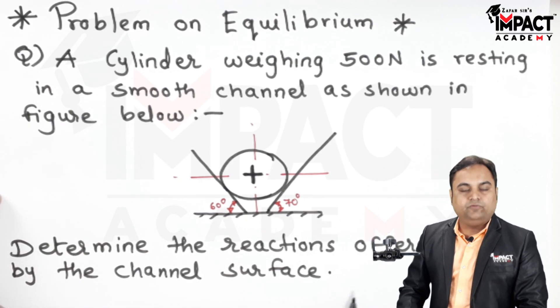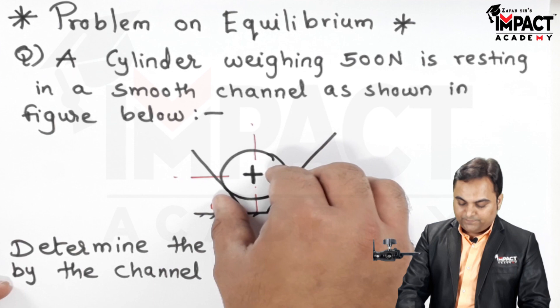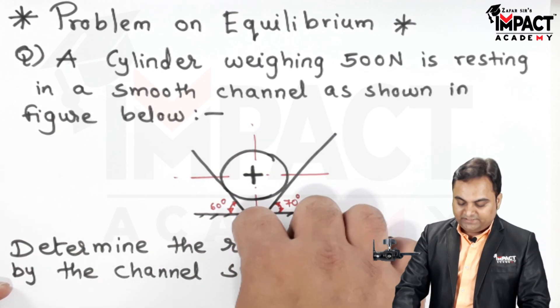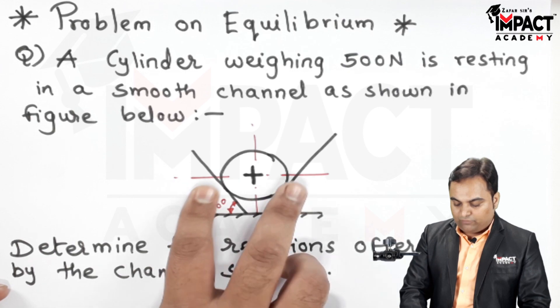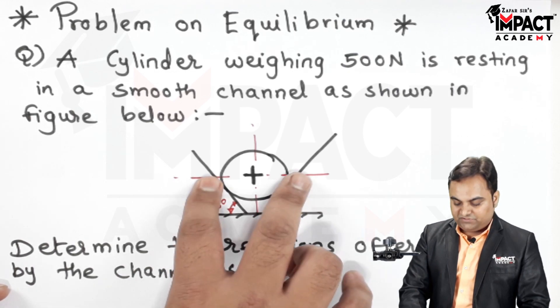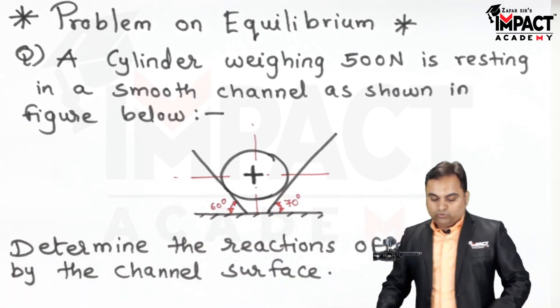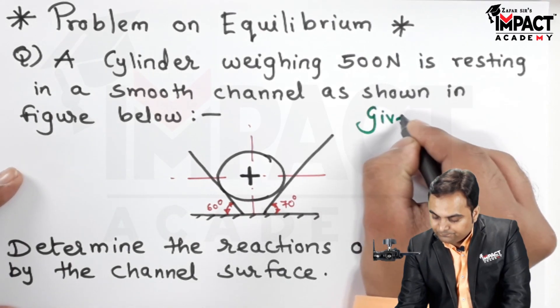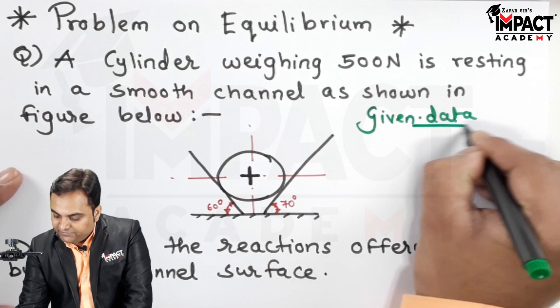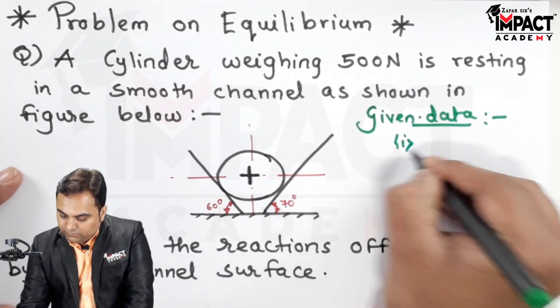So we have to find out when this cylinder is kept, its weight would be acting in the downward direction and because of that there would be reactions offered by the support which would try to resist the cylinder. So in other words we have to find out, I'll write it as data.